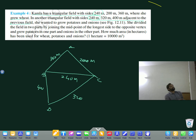What is common here? 240 is in both, so we can make a common triangular field. This is 240, this is 320, and this is 400. Name it B, C, and D. She divided this field into two parts by joining the midpoint of the longest side to the opposite vertex. Half will have onion, half will have potato.